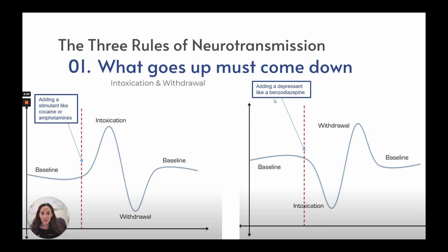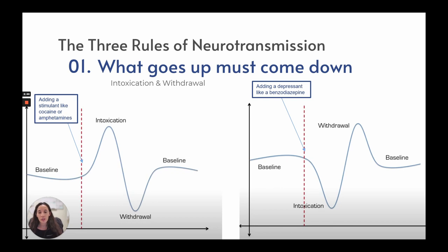When adding a depressant like a benzodiazepine, we will see intoxication as being sedated, relaxed, calm. However, when they are withdrawing, they go the opposite way. That is why we have a risk for seizures and things like that, because they are getting amped up when they withdraw.